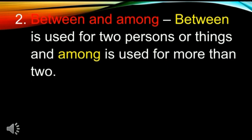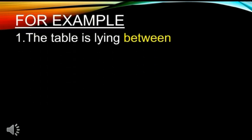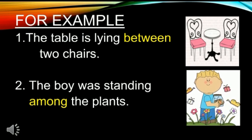Now we will discuss the use of the prepositions 'between' and 'among.' 'Between' is used for two persons or things, and 'among' is used for more than two. For example, 'The table is lying between two chairs' — the table is in the middle of two chairs, so we use 'between.' 'The boy was standing among the plants' — the boy was in the middle of more than two plants, so we use 'among.'